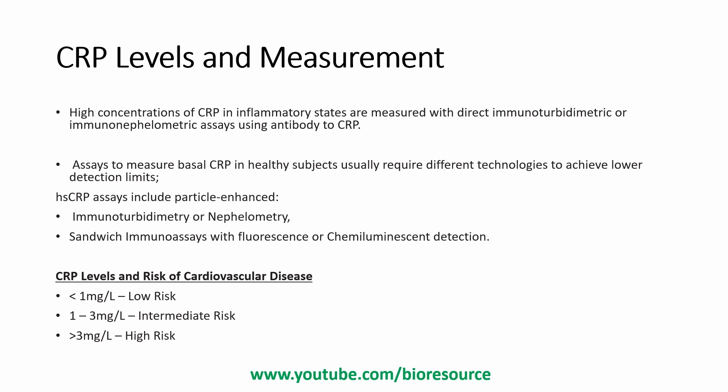CRP levels and measurement methods: high concentrations of CRP in inflammatory states are measured with direct immunoturbidimetric assays using antibodies to CRP. Assays to measure basal CRP levels in healthy subjects require different technology to achieve lower limits of detection. These are called high-sensitivity CRP assays, or hs-CRP assays, and include particle-enhanced immunoturbidimetry or nephelometry, as well as sandwich immunoassays with fluorescence or chemiluminescence detection.